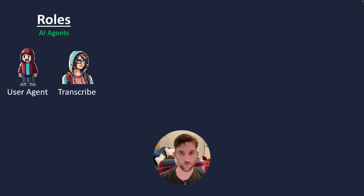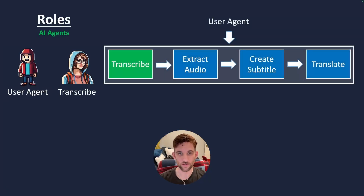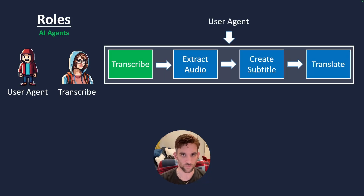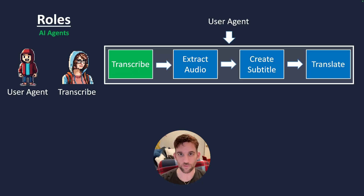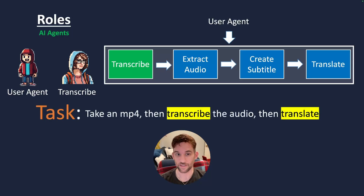So the first thing we're going to do is we're going to have two agents — the user agent and then a transcribe agent. The user agent is going to chat with the transcribe agent, and we have a series of functions. The first thing we're going to do is extract the audio from the video file, an MP4. Then we're going to have another function that creates the subtitles from that audio using the Whisper model. And then finally, we're going to have another function that translates that subtitle text to a different language, with inputs that allow us to choose which language we want to translate to. So the task today is to take an MP4 file, transcribe the audio, and then translate it to some language of our choosing. Well, let's go over the code.